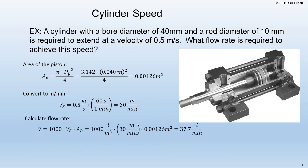Now we're going to use the extension velocity and our area to find our flow. The equation is: extension velocity equals Q divided by 1,000 times AP. Solving for Q: Q equals 1,000 times VE times AP. So we take 1,000 times 30 times 0.00126 and get 37.7 liters per minute. We have meters times meters squared, which is meters cubed, divided by meters cubed in the denominator, so the meters cancel and we're left with liters per minute — correct for flow.